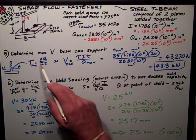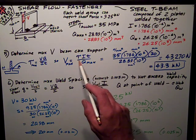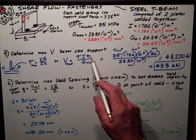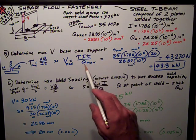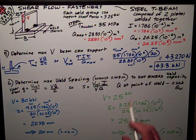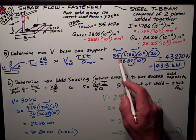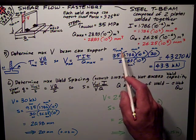So I rearrange this equation and I get the maximum shear is equal to the allowable shear stress times I times T divided by Q_max for that shape. So plugging in the numbers, I have allowable shear stress, 35 megapascals, which is newtons per millimeter squared.